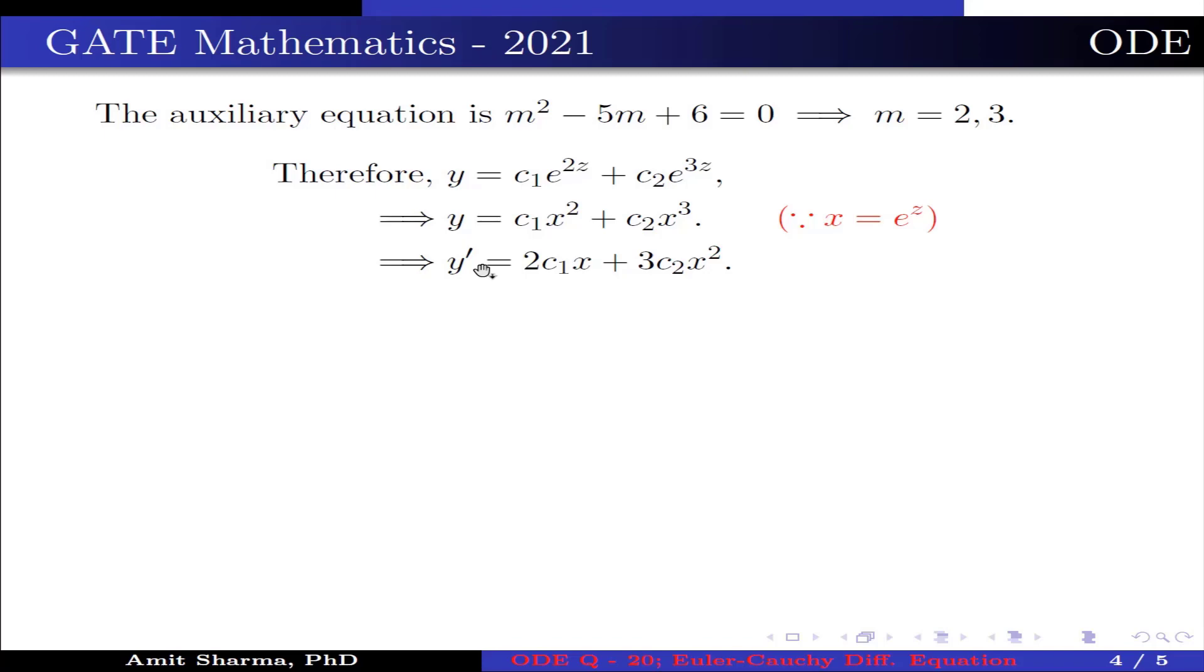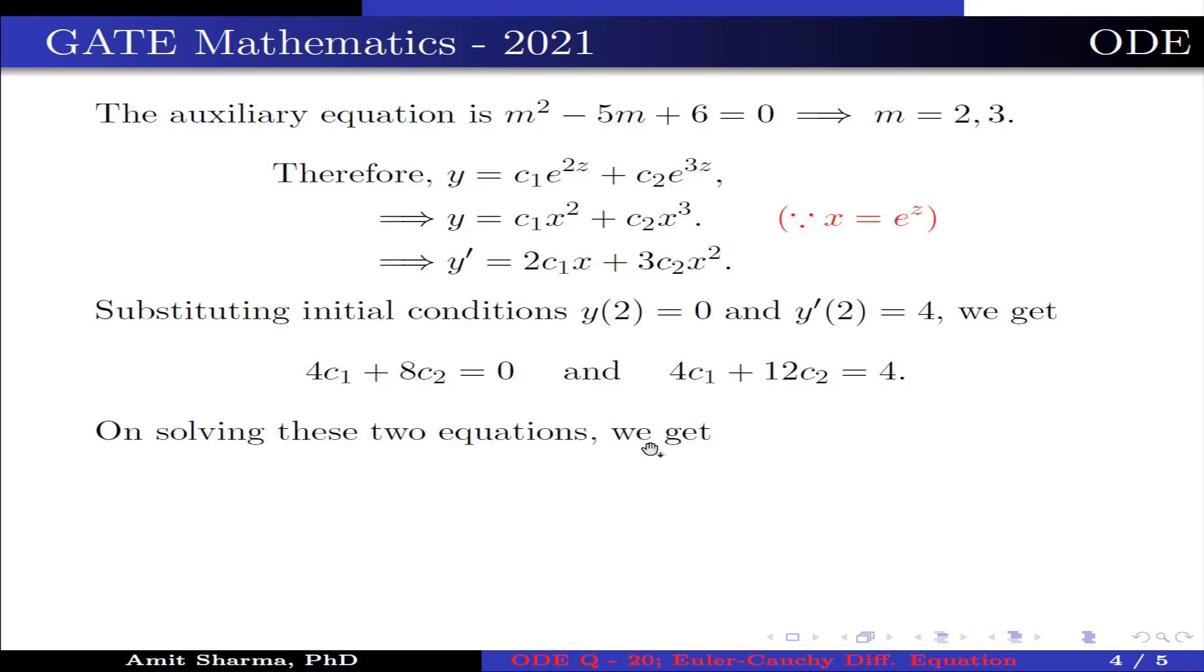Differentiate y with respect to x, we get y' = 2c₁x + 3c₂x². Substituting initial condition y(2) = 0 and y'(2) = 4, we get 4c₁ + 8c₂ = 0 and 4c₁ + 12c₂ = 4. On solving these two equations, we get c₁ = -2 and c₂ = 1.